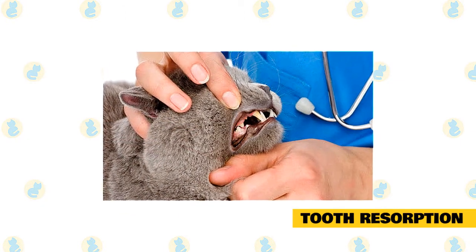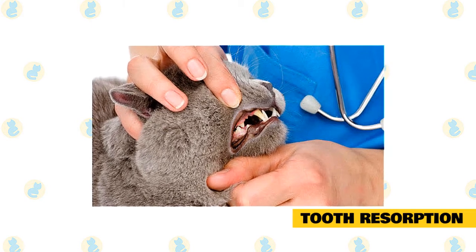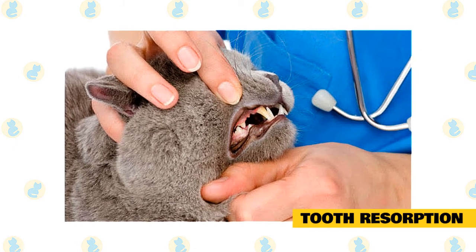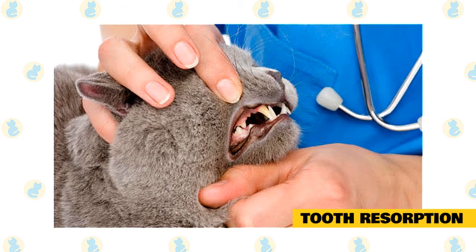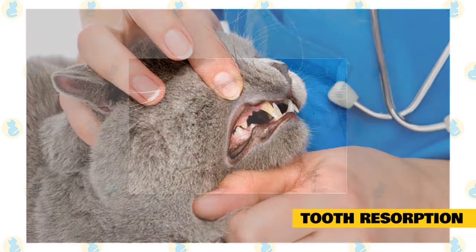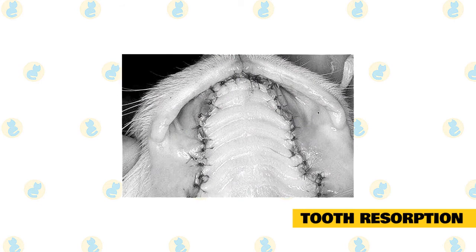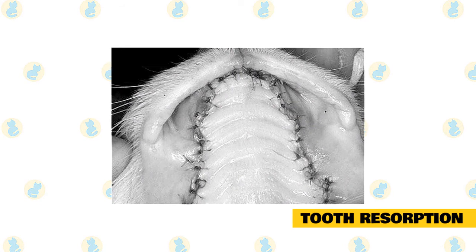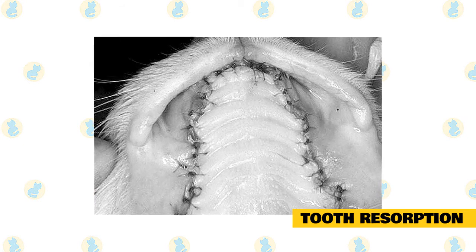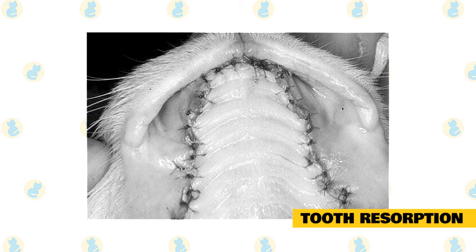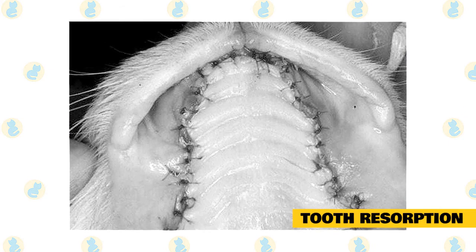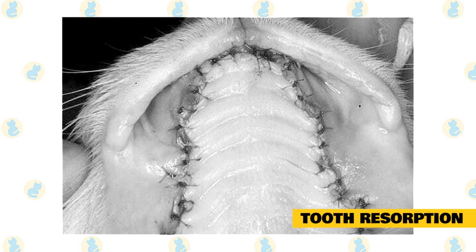To treat feline tooth resorption, a veterinarian will aim to manage the cat's pain, prevent the condition from progressing, and restore the function of the tooth as much as possible. Careful monitoring may be recommended when lesions are limited to the tooth root and discomfort is not apparent. When a cat is showing signs of pain and lesions extend into the crown, it's best to remove the tooth. If there is significant damage, the veterinarian may consider amputating the crown — the part visible above the gum line.